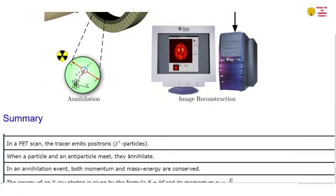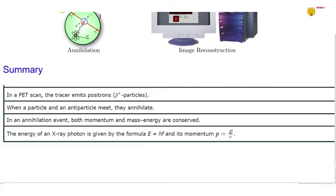Now we're going to look at the summary. So in a PET scan, the tracer emits positrons. When a particle and an antiparticle meet, they annihilate. Then in an annihilation event, both momentum and mass energy are conserved. Then the energy of a gamma ray photon is given by the formula E = hf, and the momentum p = E/c.